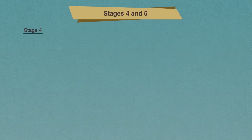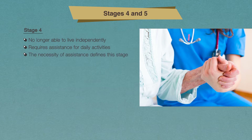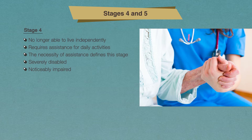In stage four of Parkinson's disease, you are no longer able to live an independent life and require assistance to do some of your daily activities. It is the necessity of assistance that defines this stage of the disease. At this stage, you have become severely disabled. Although you may be able to walk and stand unassisted, your body is noticeably impaired.